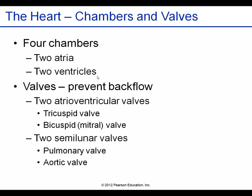To summarize the heart structure: four chambers — two atria and two ventricles — with valves preventing backflow. Two atrioventricular valves: the tricuspid on the right and the bicuspid (or mitral) on the left. Two semilunar valves at the entrance of the major arteries: the pulmonary valve and the aortic valve. The semilunar valves are pocket-shaped, while the cuspid valves are flap-like.